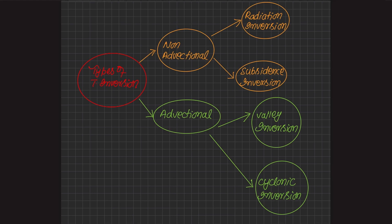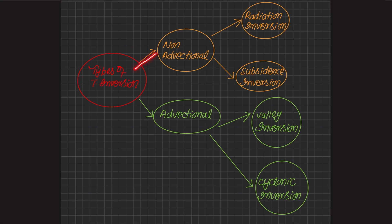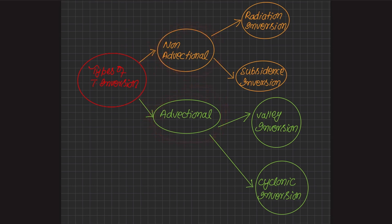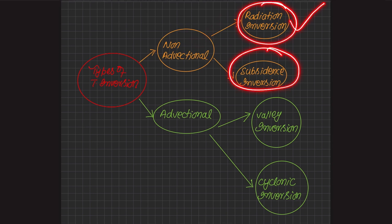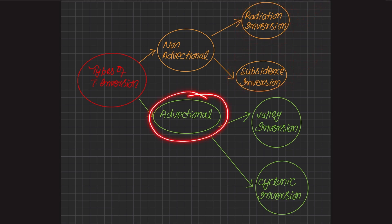The following types are classified on the basis of relative heights from the earth's surface and the type of air circulation. There are two major types: non-advectional and advectional. The non-advectional type is further divided into radiation inversion and subsidence inversion. The advectional type is further divided into valley inversion and cyclonic inversion — so overall there are four types of temperature inversions.